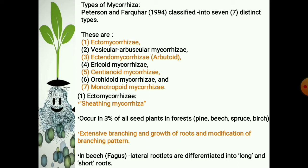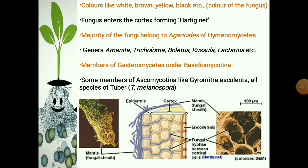Ectomycorrhizae is commonly called sheathing mycorrhizae. They occur in 3% of all seed plants in the forests of temperate regions, especially on pine, beech, spruce, birch, etc. They cause extensive branching and growth of roots and modification of the branching pattern, such as racemose type in dicots and dichotomous in gymnosperms. In beech, the ultimate lateral rootlets are differentiated into long and short roots; long roots show indefinite growth and their branches are short roots that are thickened, forked, and mycorrhizal.